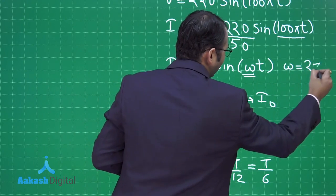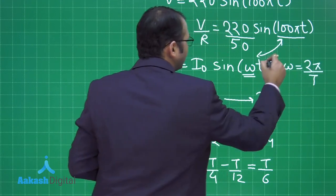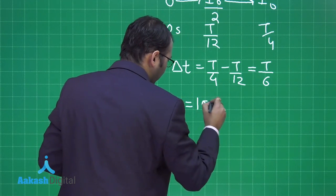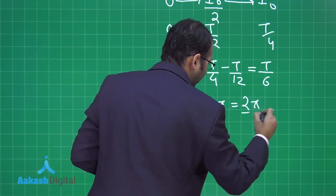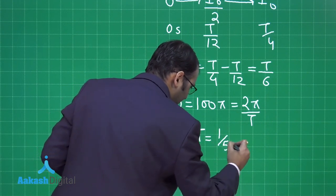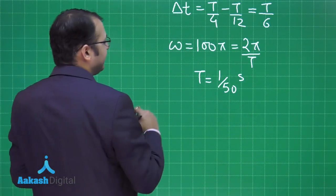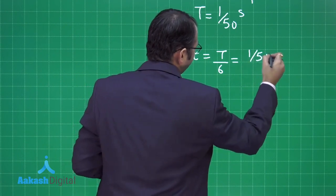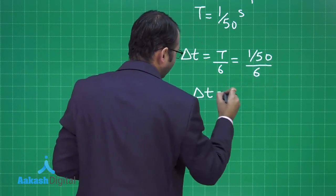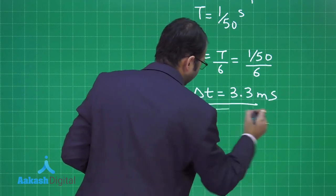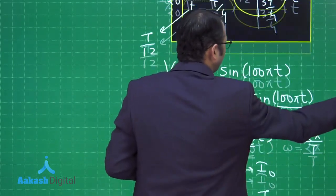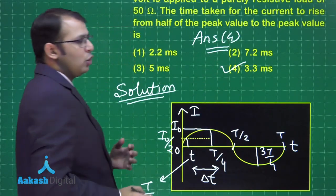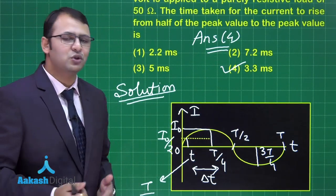From the current equation, ω = 100π. Since ω = 2π/T, we get T = 2π/100π = 1/50 seconds. Therefore Δt = T/6 = (1/50)/6 = 1/300 seconds ≈ 3.3 milliseconds. Checking the options, option number 4 is the right answer to this question.